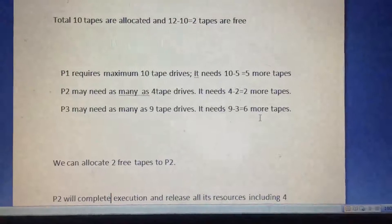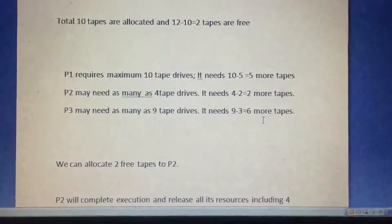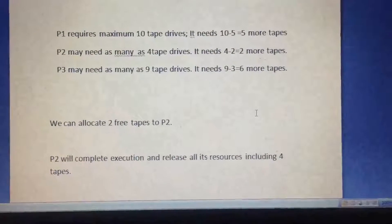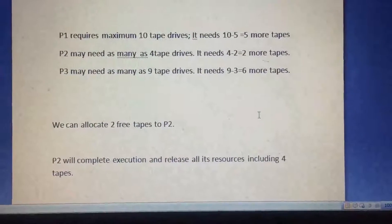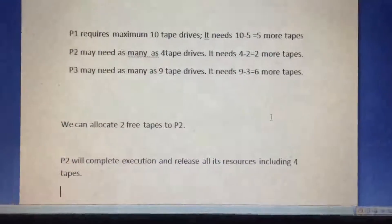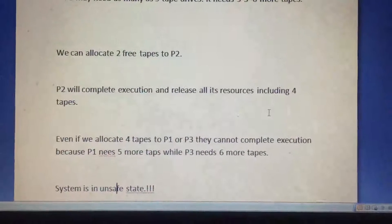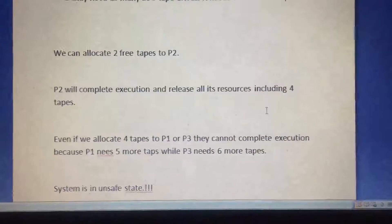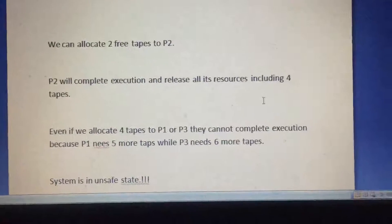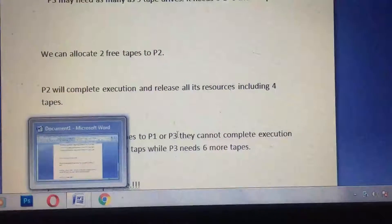So P2 we can allocate to - 2 to P2. That will execute and P2 will complete its execution and release all its resources including 4 tapes. Now we have total four tapes. So moving to other processes, even if we allocate four tapes to P1 or P3, they cannot complete execution because P1 needs - this is a mistake, you can see - P1 needs 5 more tapes while P3 needs 6 more tapes.